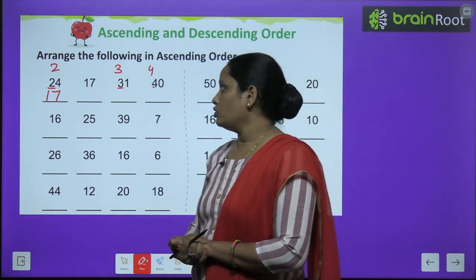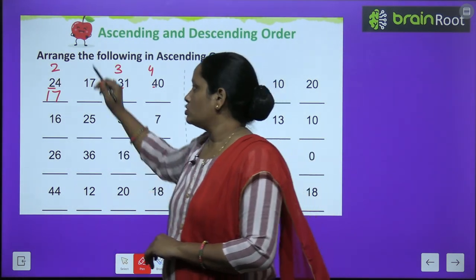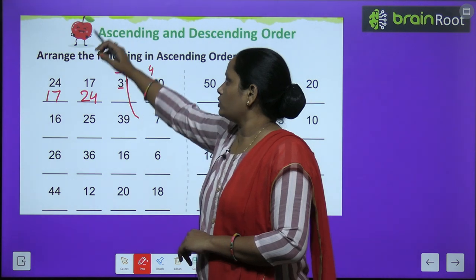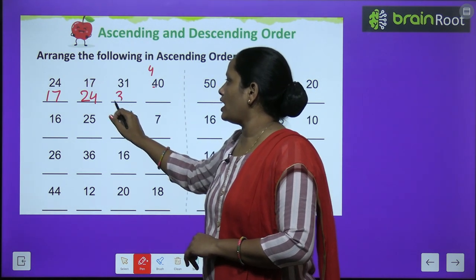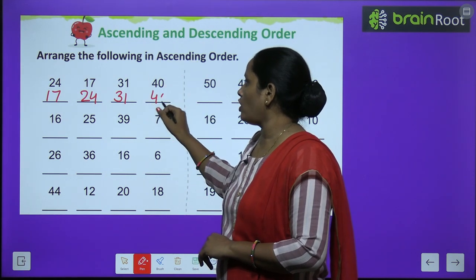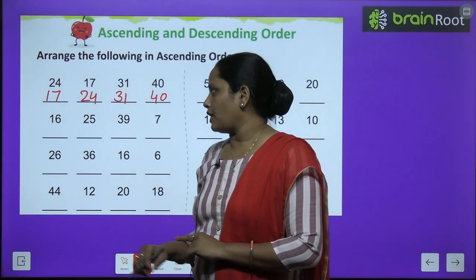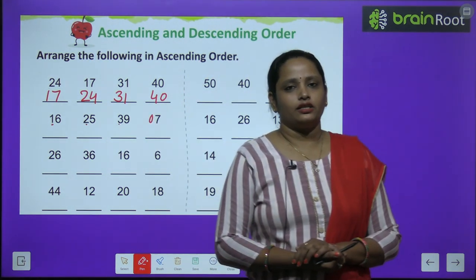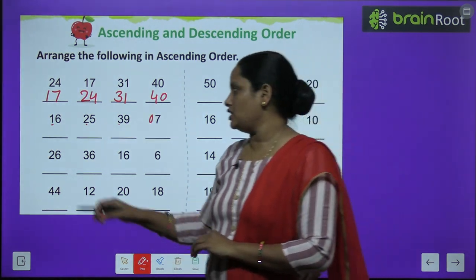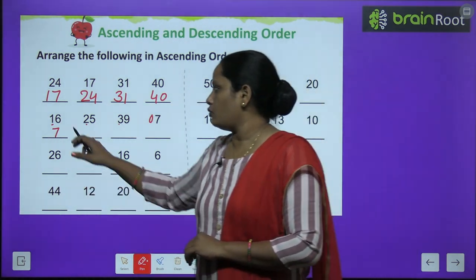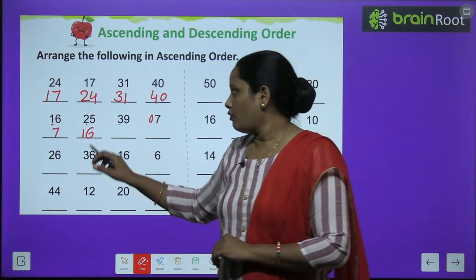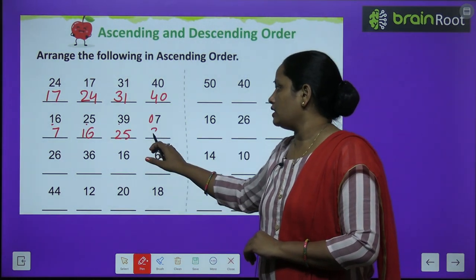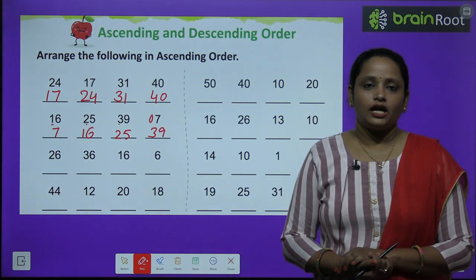Ab kawun sa number hai jo usse chhota hai? One ke baad aata hai two. So hum likhenge twenty-four. Ab two ke baad aata hai three. Toh yahan pe aayega thirty-one. And phir aayega forty. Ab doosre number pe aate hain. Sabka pahla word dekhenge: one, two, three. Ab seven toh akela hai, toh seven se pehle ek zero laga deta hai. Toh yahan pe hai zero. Toh kaunsa sabse chhota hai? Zero. Toh jaldi se seven likh dete hain. Ab seven ke baad aata hai one, so sixteen. Ab one ke baad aata hai two, so twenty-five. Phir hai three, so thirty-nine.